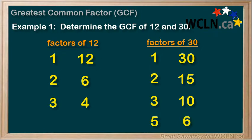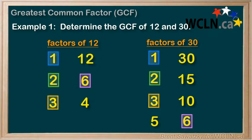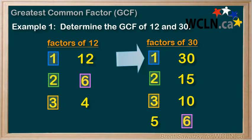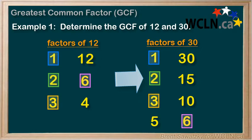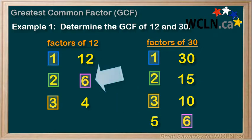We note that there are a number of factors that are common to both 12 and 30. Which one of these common factors is the largest, or greatest common factor? 1 is common between them, of course. 2 is also a common factor, and it's greater than 1. 3 is also a common factor, and it's greater than 1 or 2. We also notice that 6 is a common factor, and it's greater than 1, 2, or 3. Are there others? No — it looks like 6 is the greatest common factor between 12 and 30.